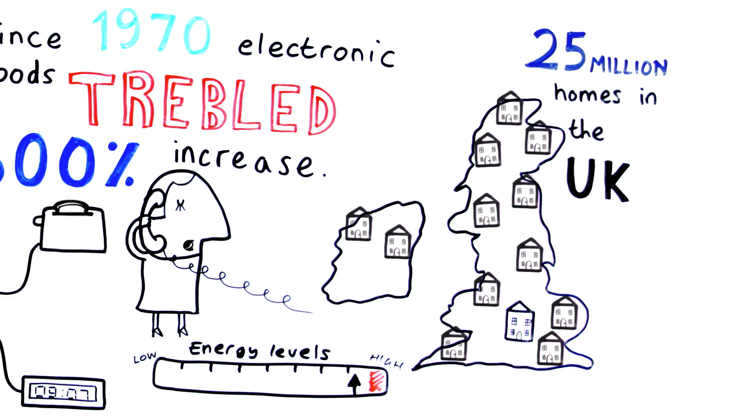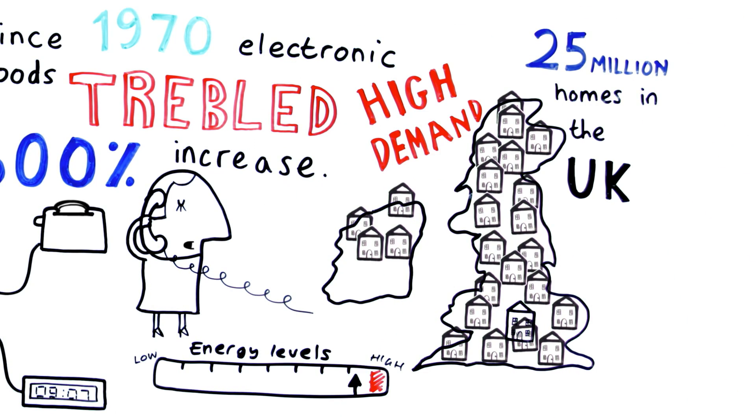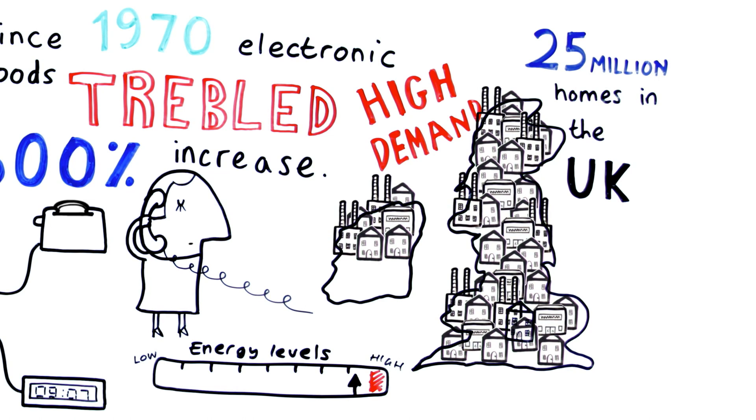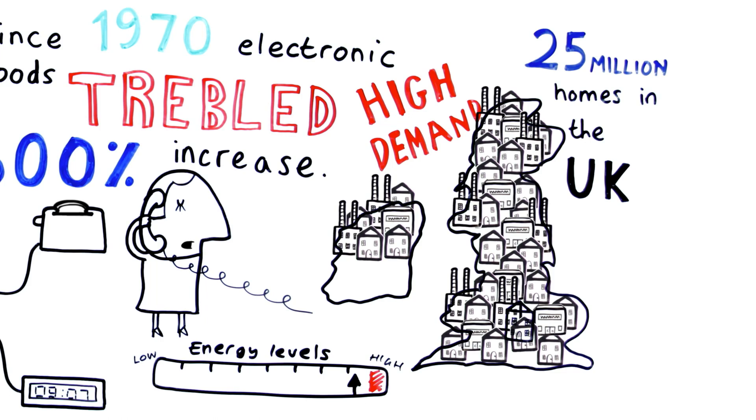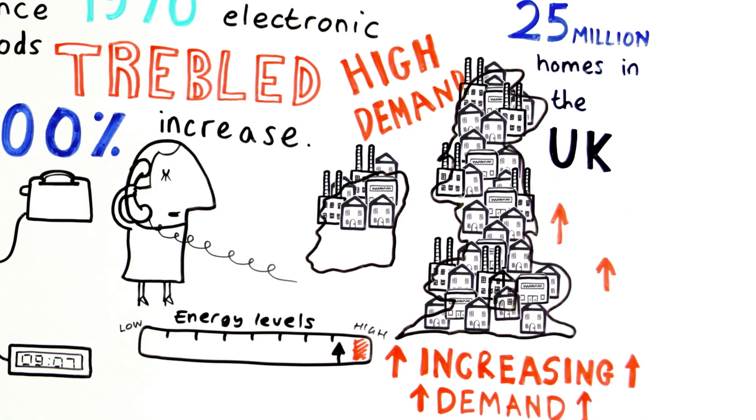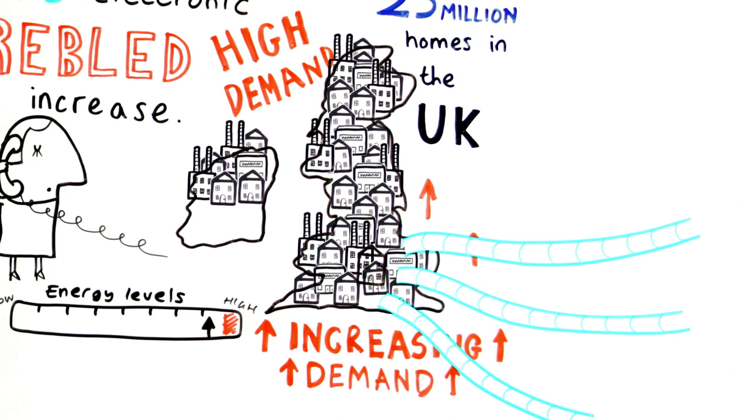Multiply that by an estimated 25 million homes in the UK, add in the demands of industry, transport, retail and agriculture, and you realise that we're a nation hooked on energy. And the worrying thing is, our energy demands are increasing all the time, which means we're becoming more and more dependent on foreign energy sources and on fossil fuels that are running out.